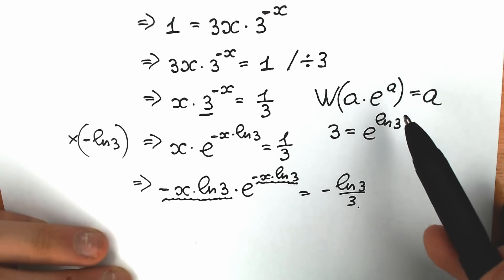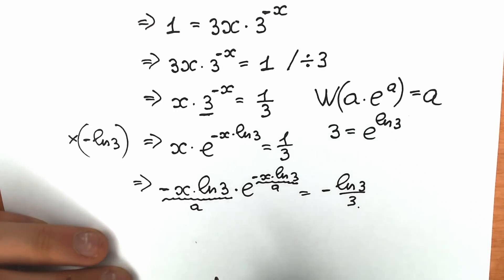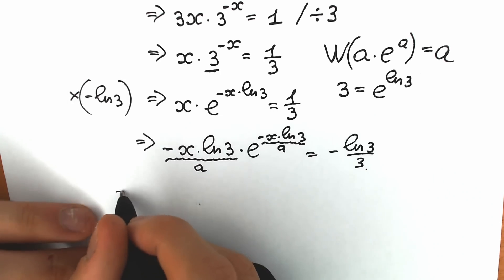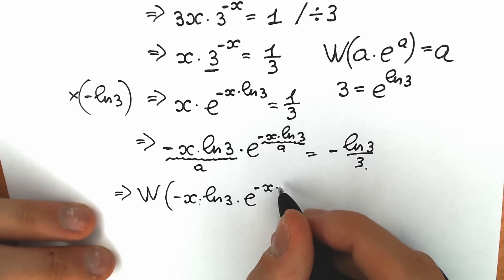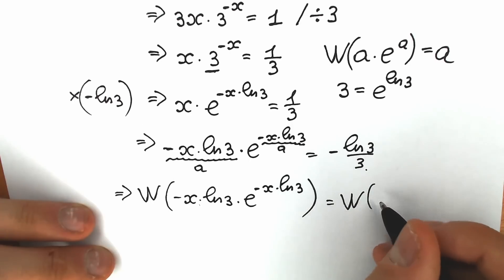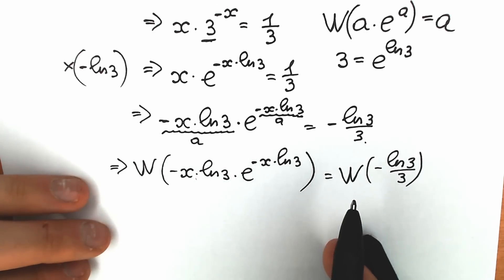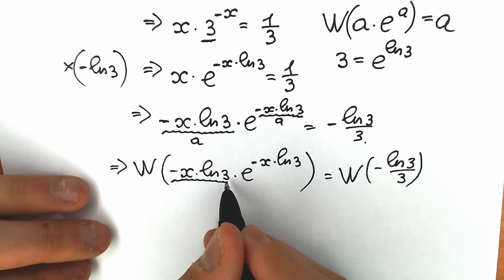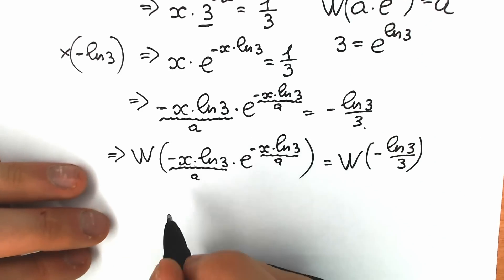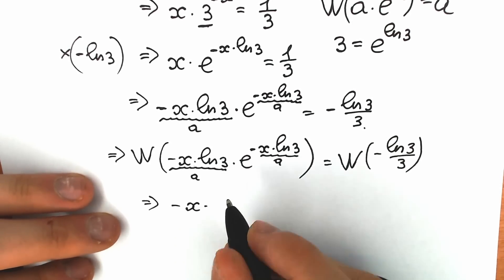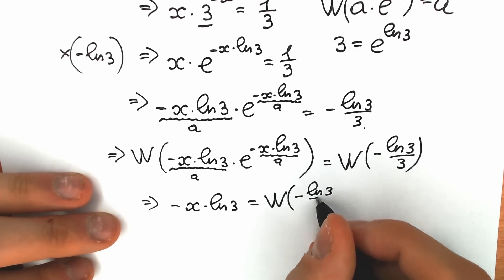We can easily apply the Lambert W function because we have exactly the form a times e to the power a — this is a, this is a. Applying Lambert W to both sides: Lambert W of minus x times natural log 3 times e to the power minus x times natural log 3, equals Lambert W of minus natural log 3 over 3. On the left side the Lambert W cancels, leaving minus x times natural log 3 equal to Lambert W of minus natural log 3 over 3.